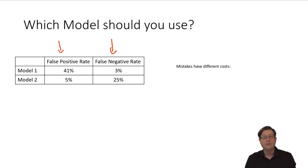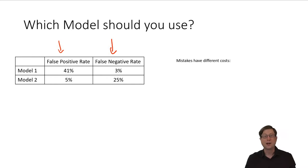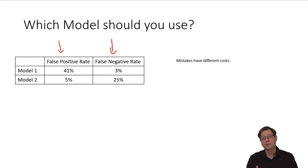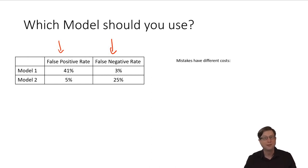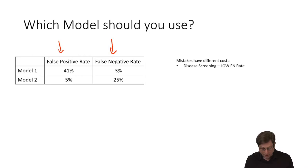So which model of these two is better? Mistakes have different costs, and that depends on what you're trying to do with the model. This lecture is a lot about lining up what you're trying to do with what your model is able to do. By the time this lecture is done, you're going to have a few new tools for making your model do more than you thought it could. Mistakes have different costs.